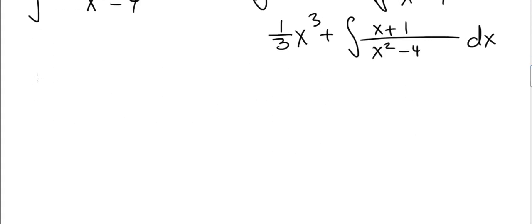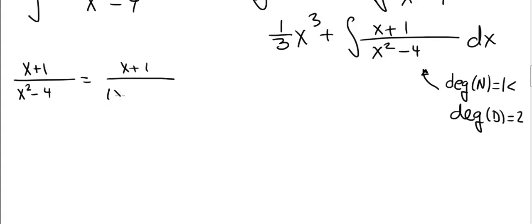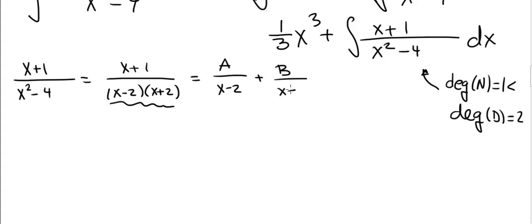All we have to do to finish the original problem is evaluate the integral of x plus 1 divided by x squared minus 4. Let's use partial fraction decomposition. For this integral, the degree of the numerator is 1, which is strictly less than the degree of the denominator, which is 2, so we can use the method of partial fractions. We write x plus 1 divided by x squared minus 4, which factors as x plus 1 divided by x minus 2 times x plus 2. Since we have two distinct linear terms, this equals A divided by x minus 2 plus B divided by x plus 2.